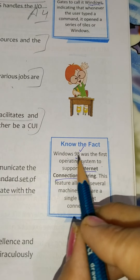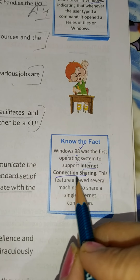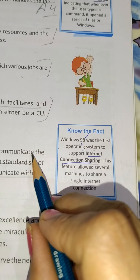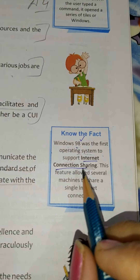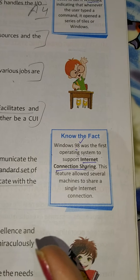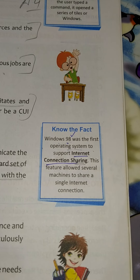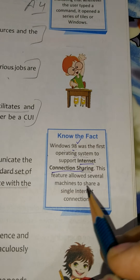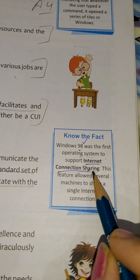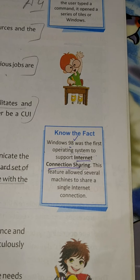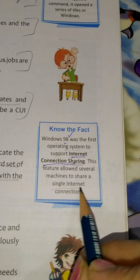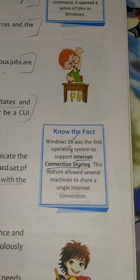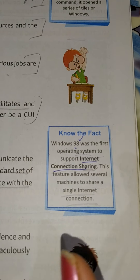Know the fact: Windows 98 was the first operating system to support internet connection sharing. Before that — with Windows 95, Windows 3.1, or DOS — there was no connection sharing and no networking. This feature allowed several machines to share a single internet connection. So Windows 98 was the first which supported internet and shared connection sharing.